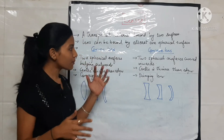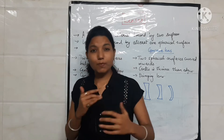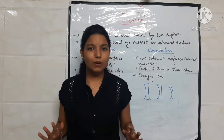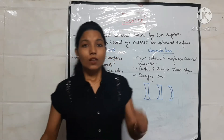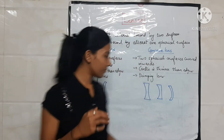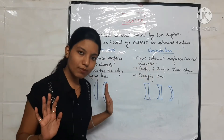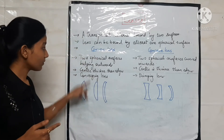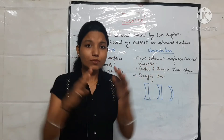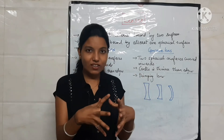So let's see the types: concave and convex. Both are made of two spherical surfaces — that's the same — but the difference is that convex is bulging outwards, while concave is curved inwards, as if someone has pressed it inward.